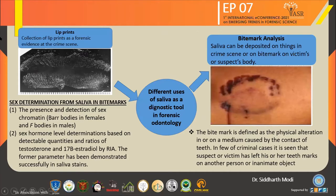The different uses of saliva as a diagnostic tool in forensic odontology: the first is bite mark analysis. Saliva can be deposited on things at crime scenes or on bite marks on a victim's or suspect's body. The bite mark is defined as a physical alteration in or on a medium caused by the contact of teeth. In some criminal cases, it is seen that a suspect or victim has left their teeth marks on another person or an inanimate object.